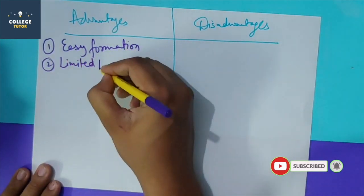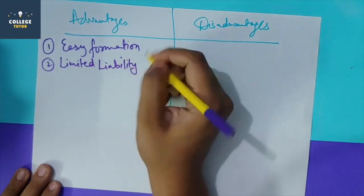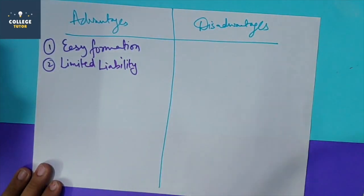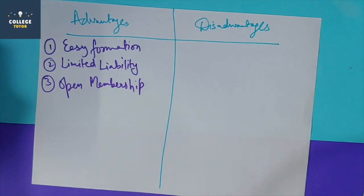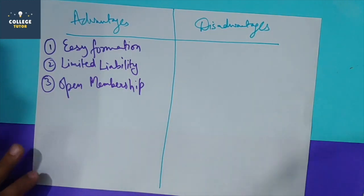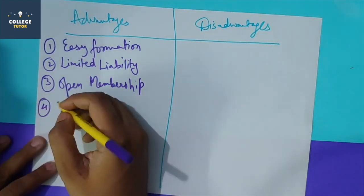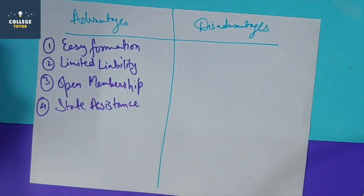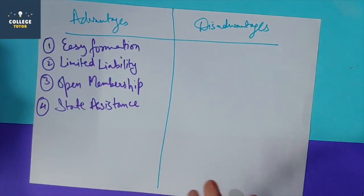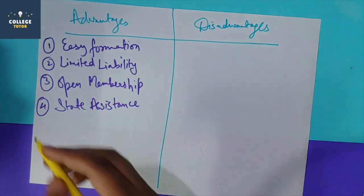The second advantage is limited liability. The third advantage is open membership - in cooperative society there is open membership. Anyone can become a member with the consent of the existing members, and there is no restriction in the law. The fourth advantage is state assistance - there are exemptions, concessions, and tax benefits available to cooperative societies from the government, as many states provide numerous exemptions.